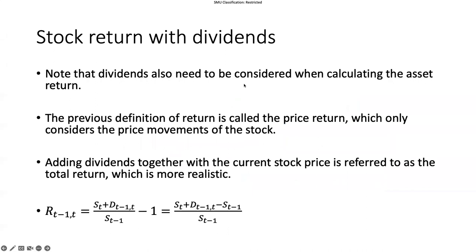The return we looked at so far is called the price return — we just look at the price to calculate the return. As mentioned, stocks usually provide dividends, and most of the time dividends also need to come into the equation by adding them in the numerator. So when we calculate the return, we add the dividends as well. This is a small change to the equation, but it gives us the so-called total return.